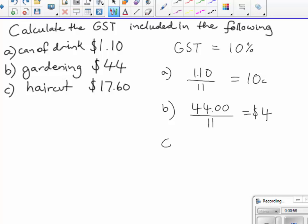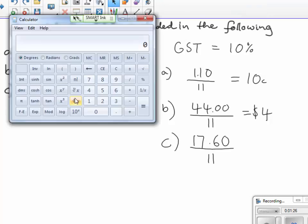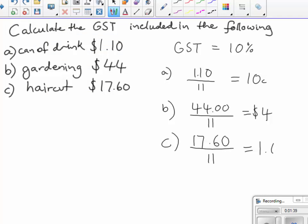And then for C, the haircut, $17.60. I might need to resort to my calculator. $17.60 divided by 11 equals $1.60.